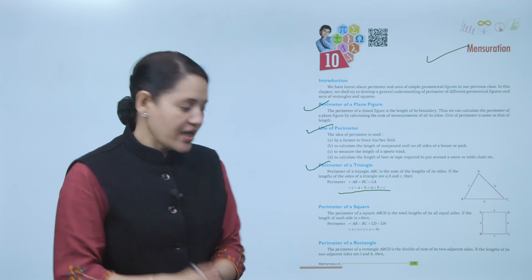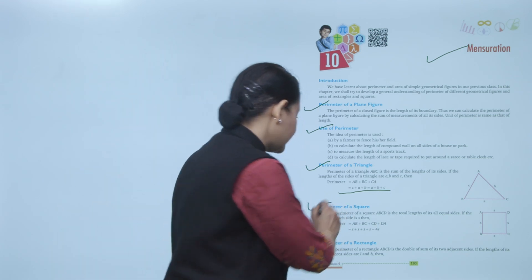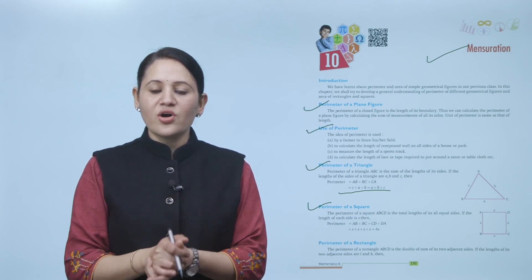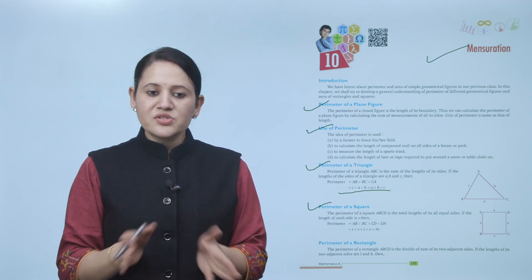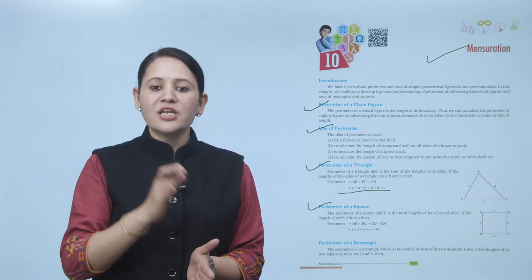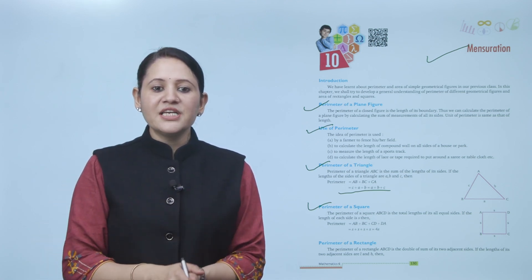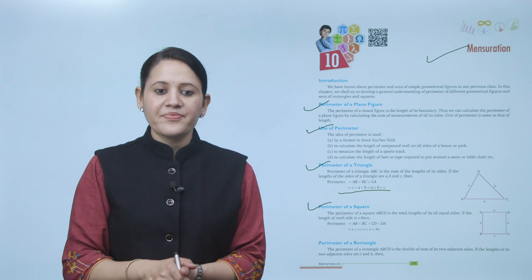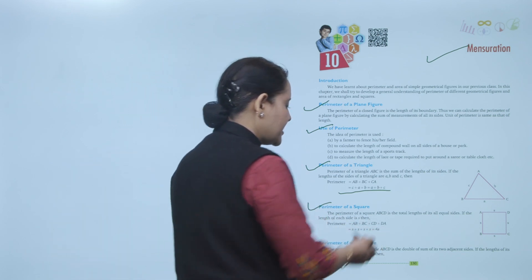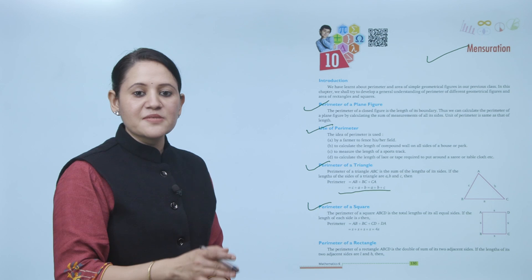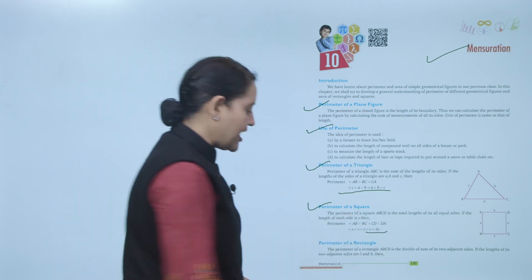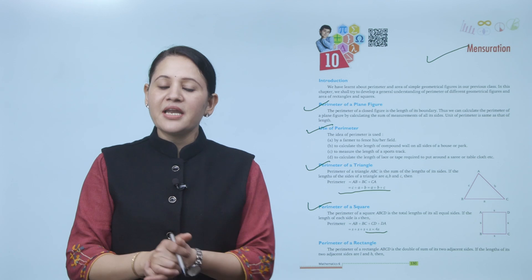Next is perimeter of a square. The perimeter of square ABCD is the total length of all its equal sides. As we know, all sides of a square are equal. If the length of each side is S, then perimeter equals AB plus BC plus CD plus DA, which is S plus S plus S plus S — that is, four times S, or 4S.